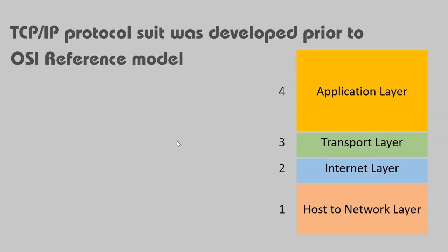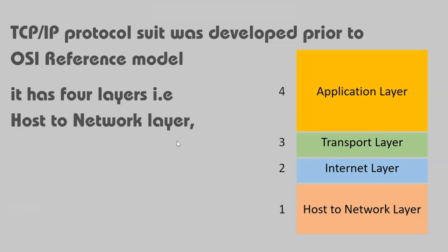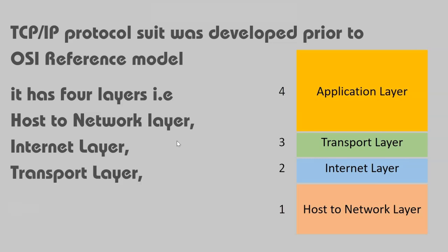This TCP/IP protocol suite was developed prior to the OSI reference model, and it has 4 layers. You can see the host-to-network layer, which is the bottom-most layer, then the internet layer, transport layer, and application layer.